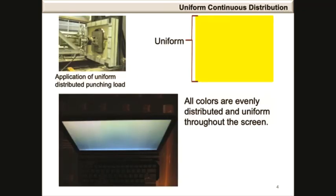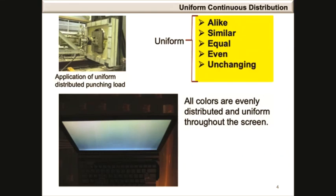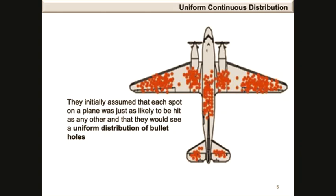The term uniform is synonymous with other words such as alike, similar, equal, even, and unchanging. There are many examples where this term can be used, such as the application of a uniform distributed punching load, all colors being evenly distributed and uniform throughout a screen, and the assumption that each spot on a plane was just as likely to be hit as any other, resulting in a uniform distribution of bullet holes.